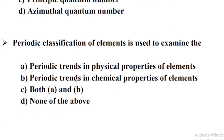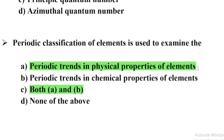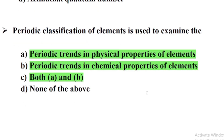Periodic classification of elements is used to examine — Option C: Both A and B. Option A: Periodic trends in physical properties of elements. Option B: Periodic trends in chemical properties of elements.